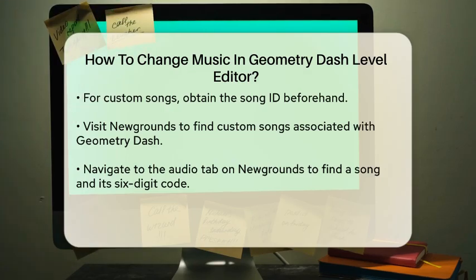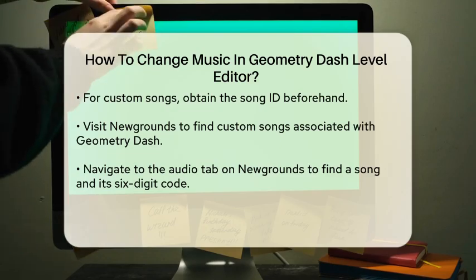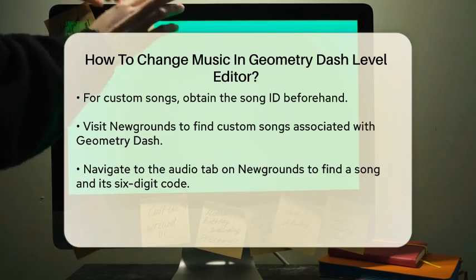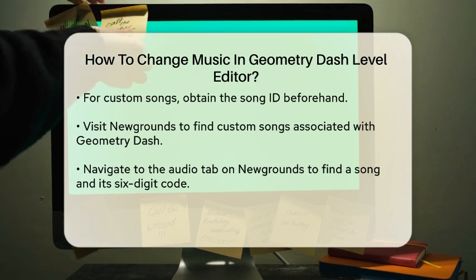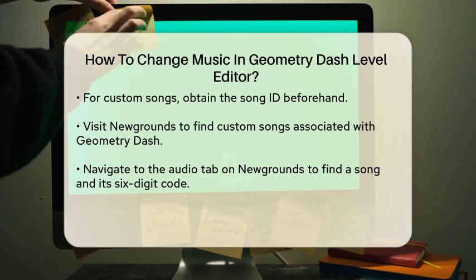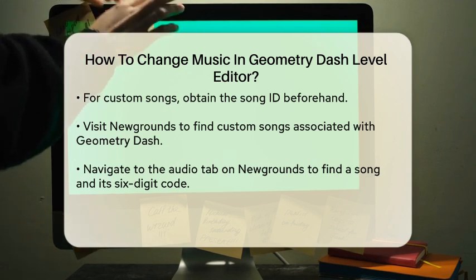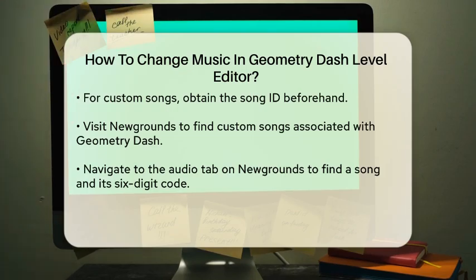To find custom songs, you can visit websites like Newgrounds, which is associated with RobTopGames, the creators of Geometry Dash. On Newgrounds, navigate to the Audio tab, find a song you like, and look for the six-digit code at the end of the song's URL. This code is your song ID.